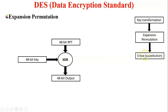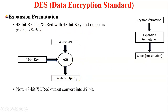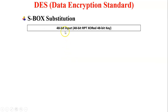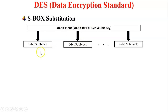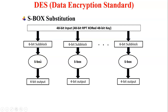Next is S-Box substitution. Why is S-Box substitution performed? Because the 48-bit RPT needs to be converted back to 32 bits, since our LPT size is 32 bits and RPT size is 48 bits. The 48-bit RPT is XORed with the 48-bit key and the output is given to the S-Box. The working of S-Box: this is a 48-bit input consisting of 6-bit sub-blocks — a total of 8 sub-blocks input to the S-Box — and it converts to a 4-bit output per block.